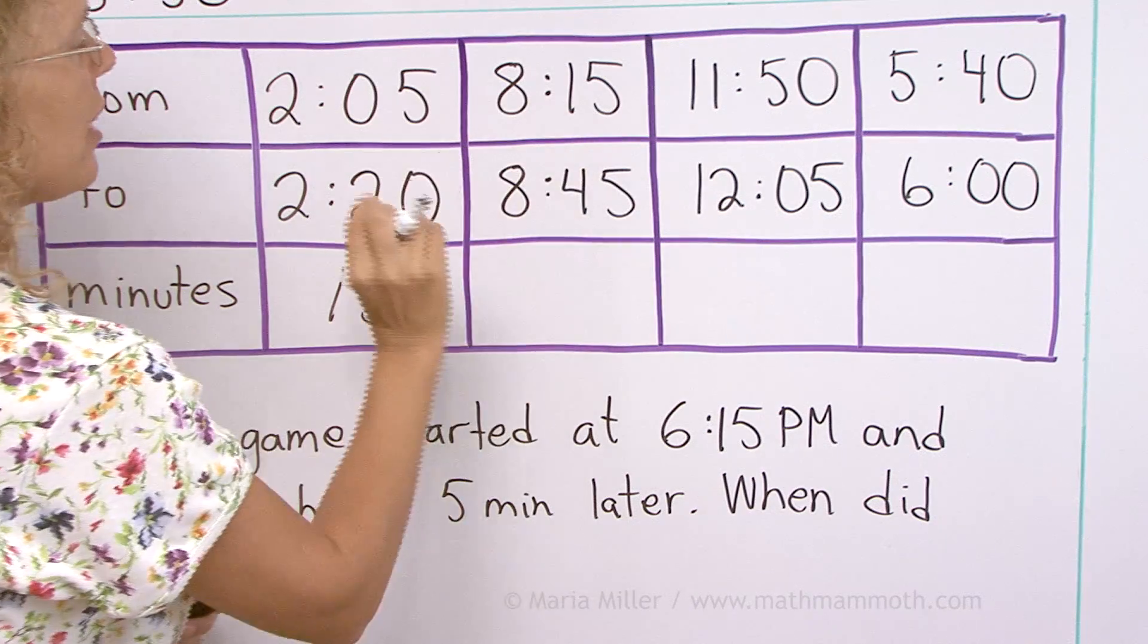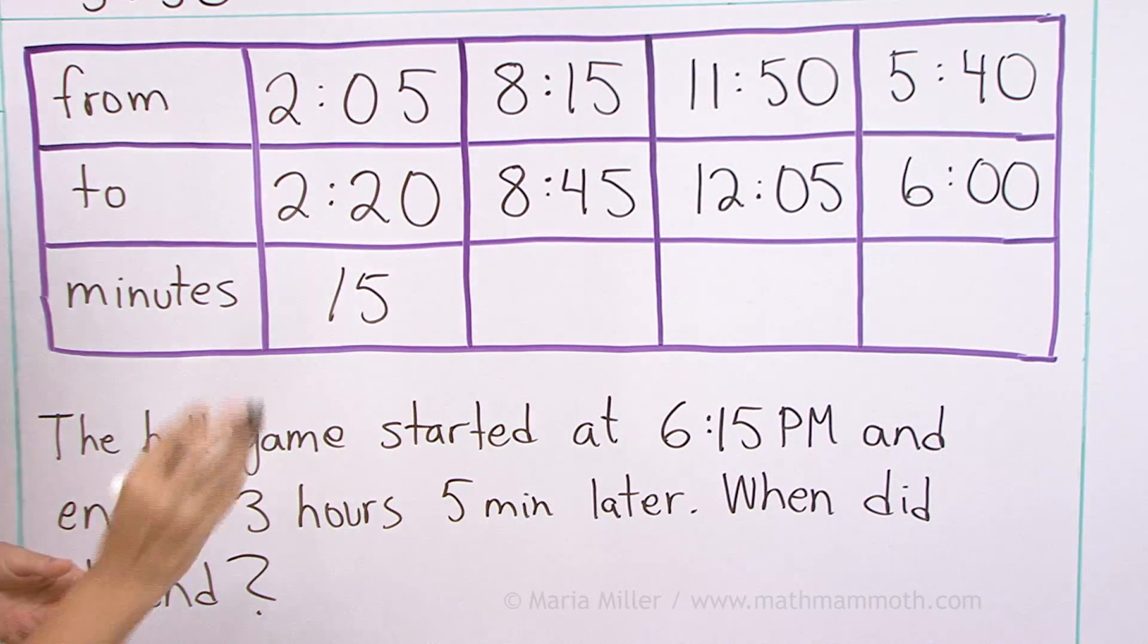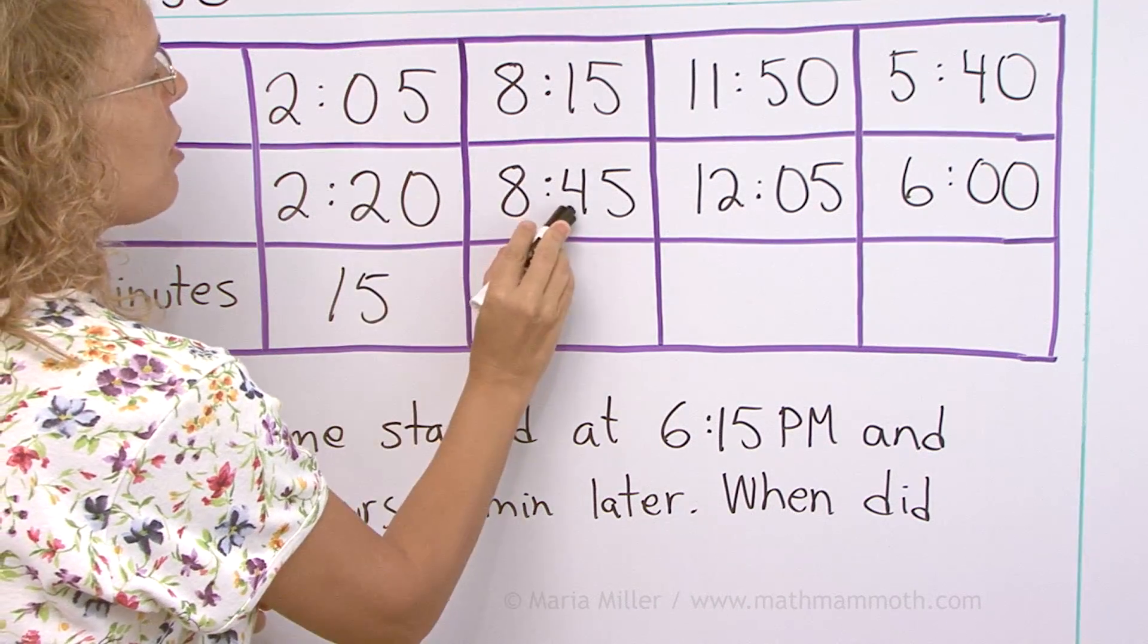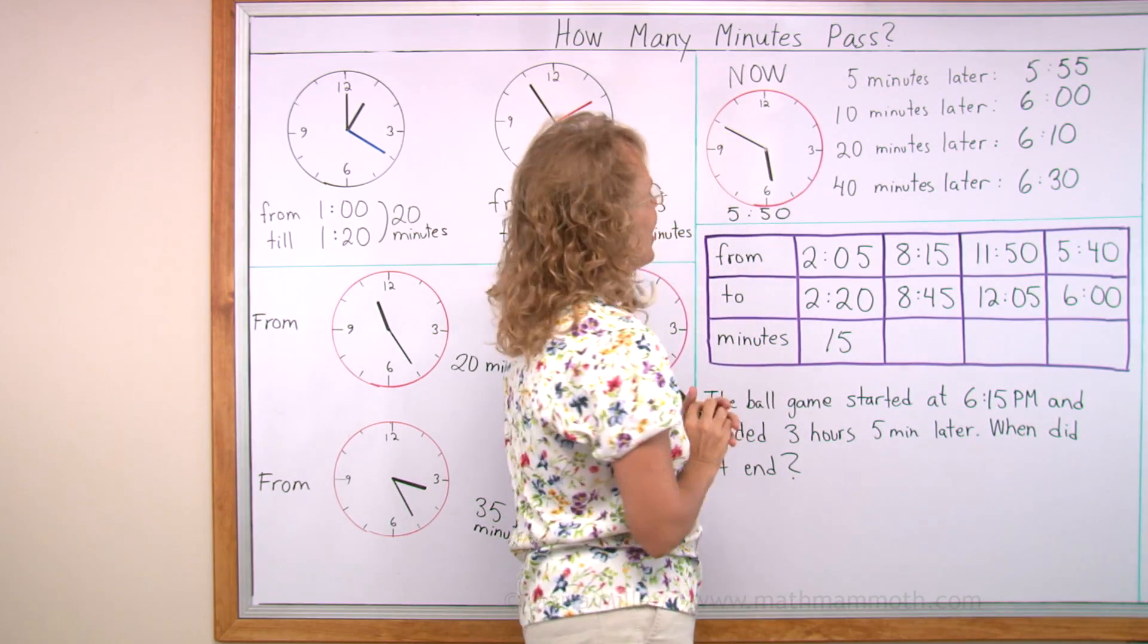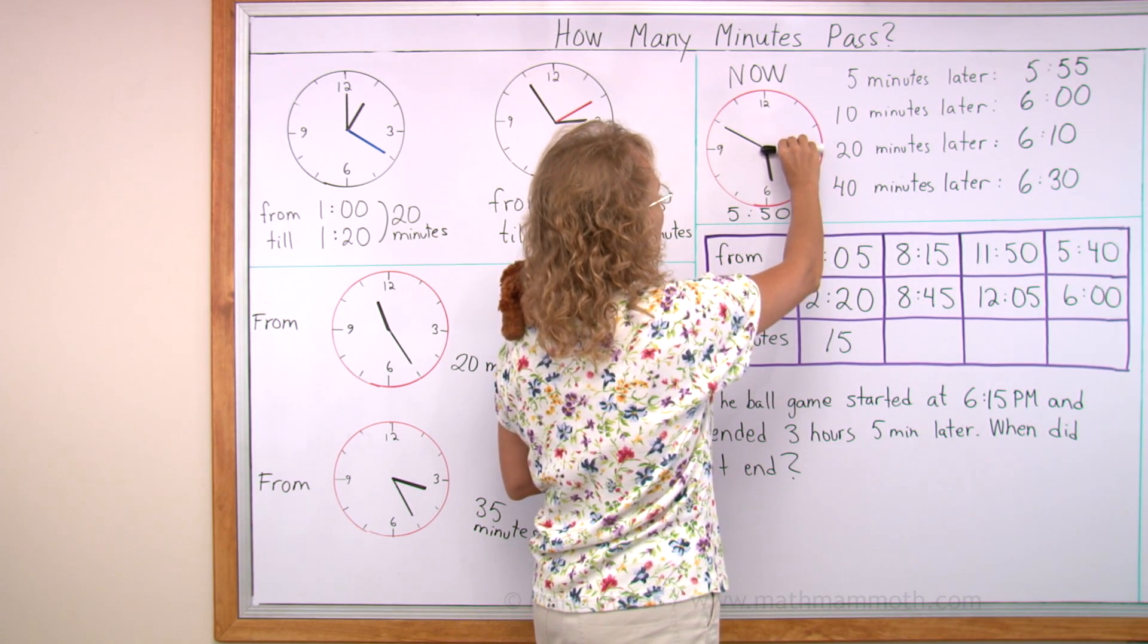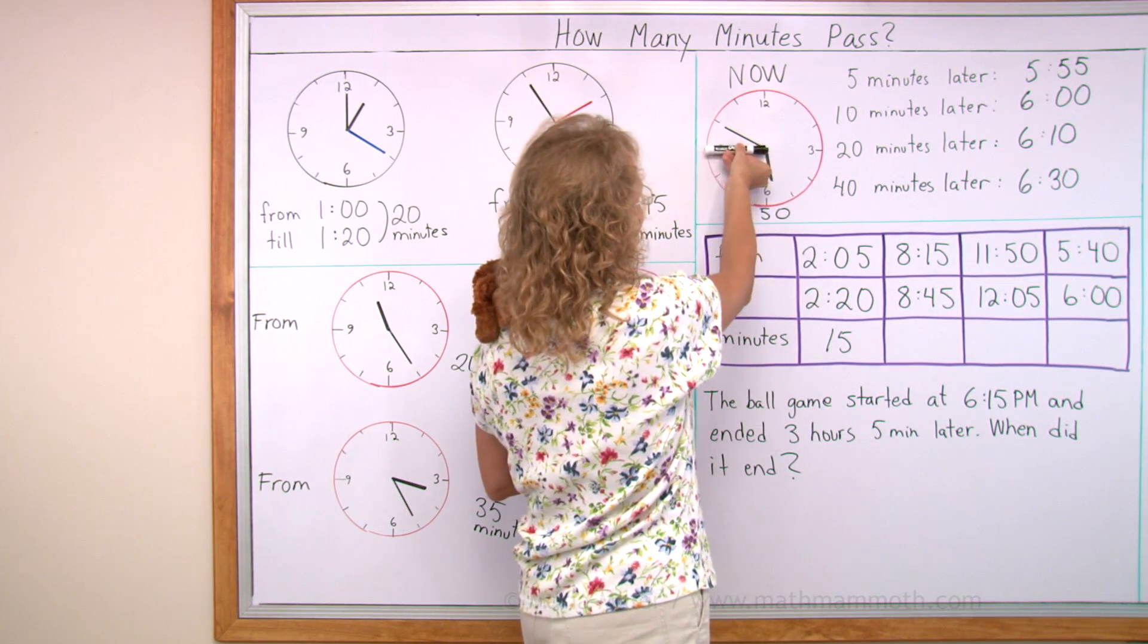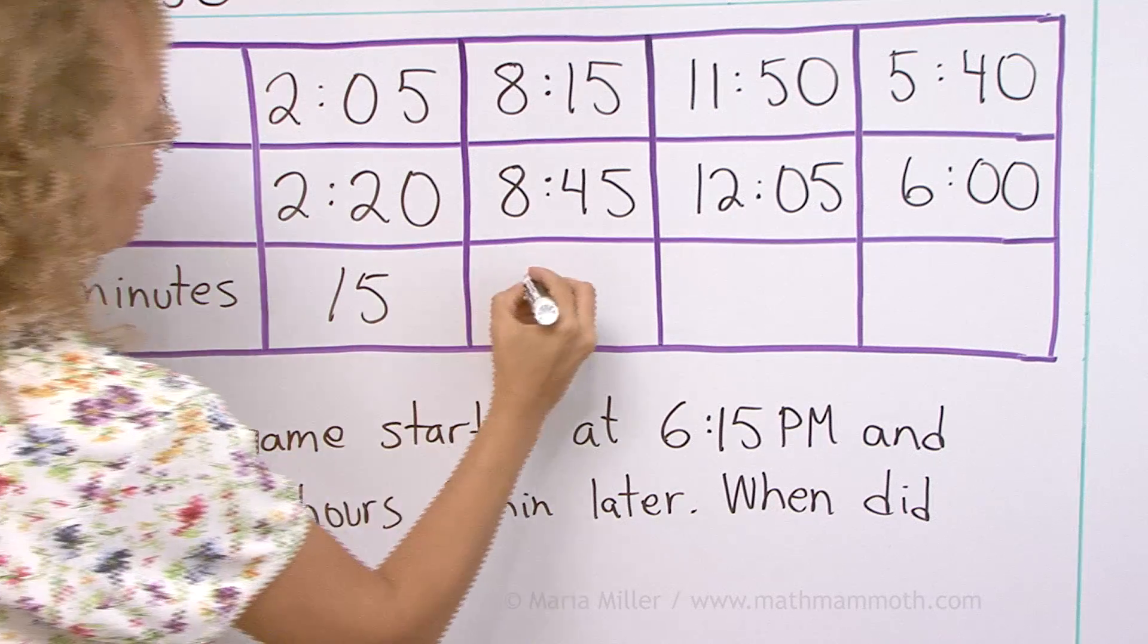How about here? 8:15, 8:45. You can, again, you can just subtract 45 minus 15. Or personally, I remember that 15 minutes would be here, pointing here. 45 minutes would be pointing here. So that's exactly half an hour or 30 minutes.